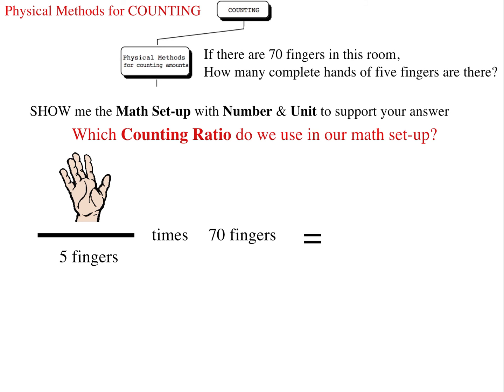One hand per five fingers times 70 fingers equals 14 hands. And we can see that our units fingers cancel out, and we're left with the image hand.